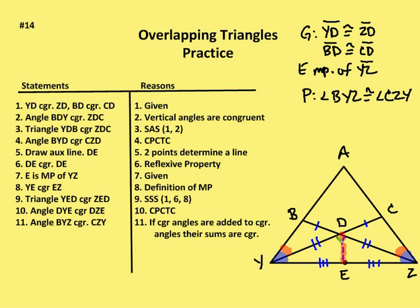So now I have two congruent triangles: DYE and DZE, by side-side-side — using YD≅ZD, DE≅DE, and YE≅EZ. Now I can say that angle DYE is congruent to angle DZE by CPCTC. Then I add angle BYD to angle DYE and angle CZD to angle DZE to get the respective congruent angles. So angle BYZ is congruent to angle CZY, because if I add congruent angles (the red angles) to congruent angles (the green angles), their sums are congruent.